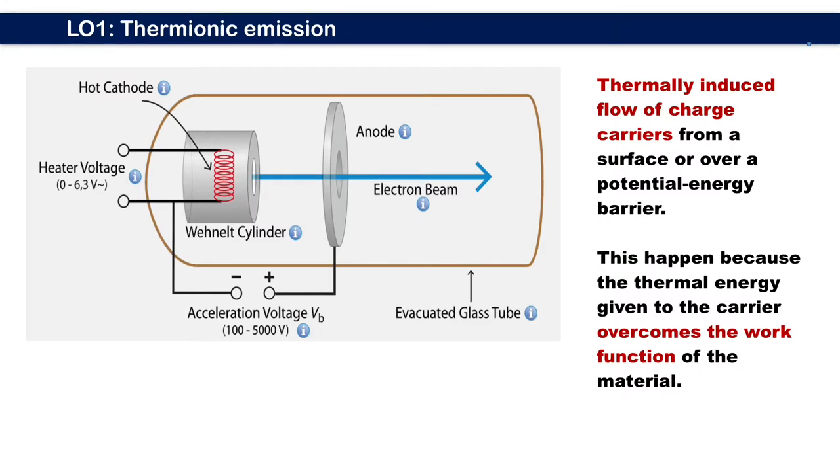What is thermionic emission? The word thermo refers to something to do with heat, and the word ionic has something to do with ionization, while the word emission has something to do with emitting a product. Thermionic emission is thermally induced flow of charge carriers from a surface or over a potential energy barrier. This happens because the thermal energy given to the carrier overcomes the work function of the material.